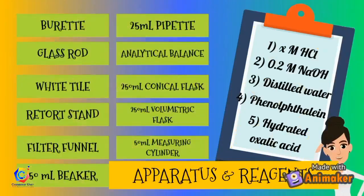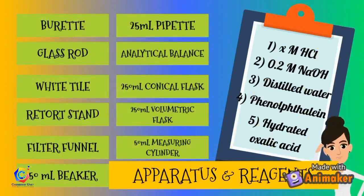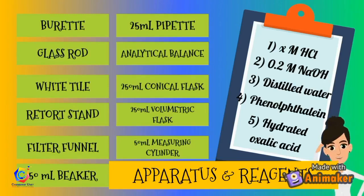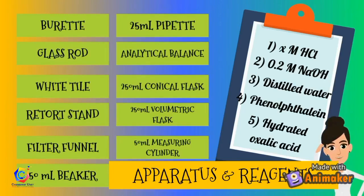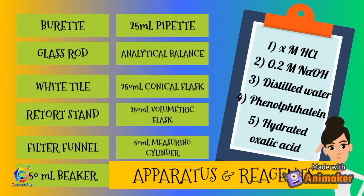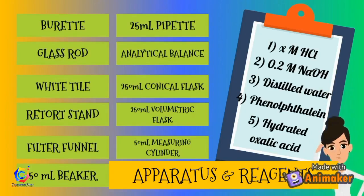There are a few apparatus and chemical reagents needed in this experiment. The apparatus include: burette, glass rod, white tile, retort stand, filter funnel, 50 ml beaker, 25 ml pipette, analytical balance, 250 ml conical flask, 250 ml volumetric flask, and 50 ml measuring cylinder.